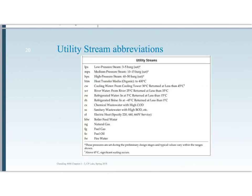Utilities need to be included on the diagram. Utilities are mostly steam, cooling water, refrigerated water, maybe waste water, boiler feed water, and fuels for furnaces. The standard abbreviations for these are listed in the table.